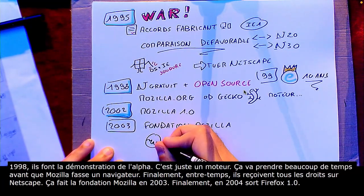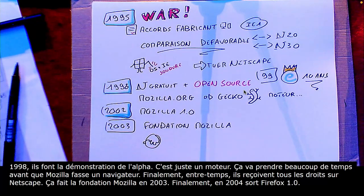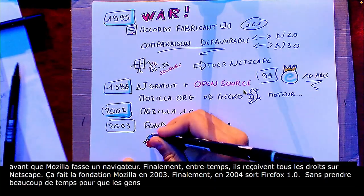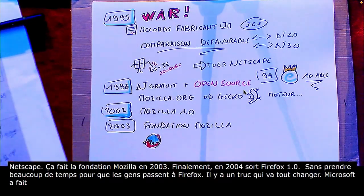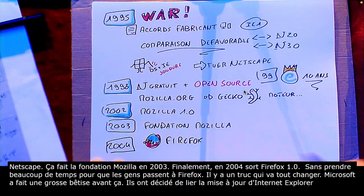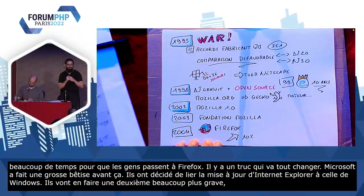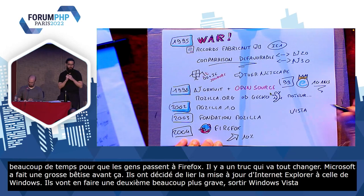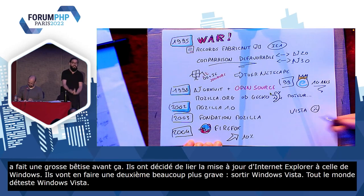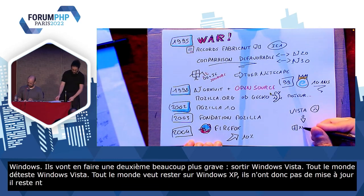L'année suivante, ça rebaisse un petit peu, et ça va mettre beaucoup de temps pour que petit à petit des gens passent à Firefox. Mais il y a un truc qui va tout changer, c'est que Microsoft a fait une grosse bêtise avant ça. Ils ont décidé de lier les mises à jour d'Internet Explorer à celles de Windows. Mais ils vont en faire une deuxième beaucoup plus grave : c'est celle de sortir Windows Vista. Windows Vista, tout le monde déteste ça. Donc les gens veulent rester sur Windows XP et du coup, ils restent avec un vieux Internet Explorer. Donc s'ils veulent utiliser le web, il faut bien qu'ils installent un autre navigateur et ils vont tous par défaut installer Firefox.